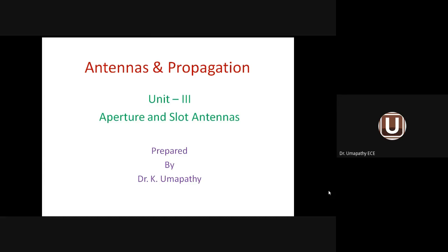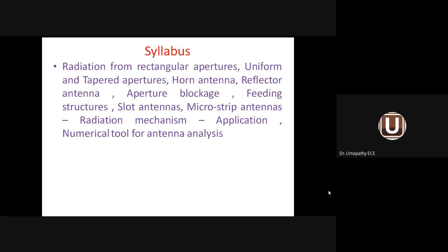Now in unit three we will come across two types of antenna — one is called aperture antenna and the other is called slot antenna. Aperture means opening — an opening in a closed surface is called an aperture. The unit is divided into two classifications: aperture antenna and slot antenna. Topics include radiation from rectangular aperture, and uniform and tapered aperture. If the opening is uniform it is called a uniform aperture; tapered aperture means only a part of the opening is available.